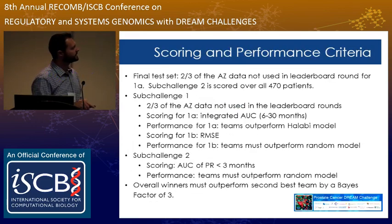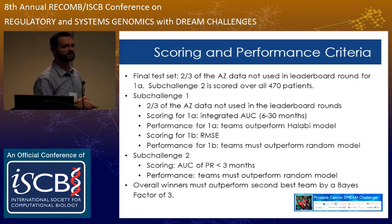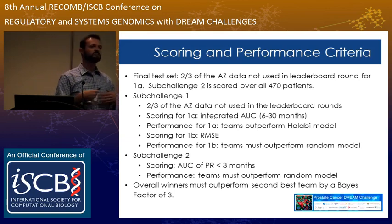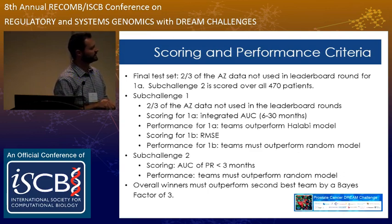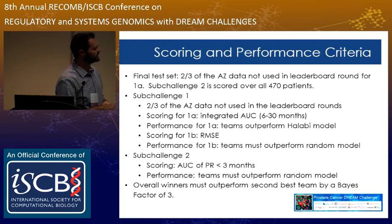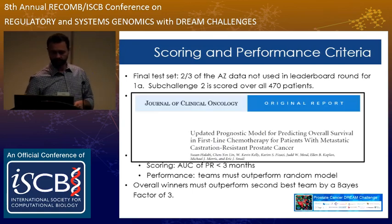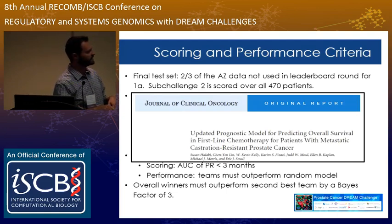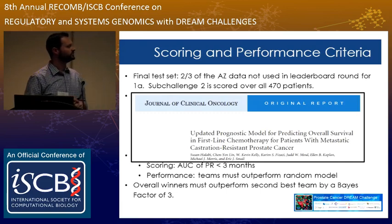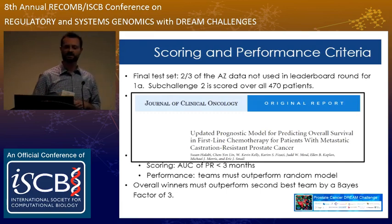For scoring, we split the AstraZeneca dataset into two-thirds and one-third subsets. Sub-challenge 1A used the integrated area under the curve from 6 to 30 months, and teams needed to outperform the Halabi model — the current standard in the field. For 1B, we used root mean squared error, and teams needed to outperform a random model to be considered a top performer. Sub-challenge 2 used the area under the precision-recall curve for patients discontinuing in less than three months of treatment. This references Susan Halabi's paper, which developed the standard for metastatic castrate-resistant prostate cancer prognostic models.